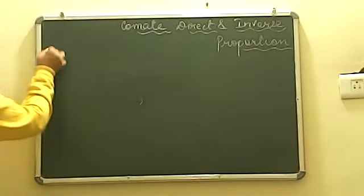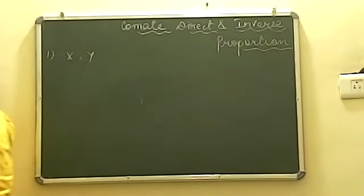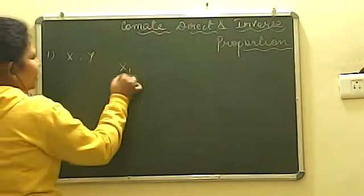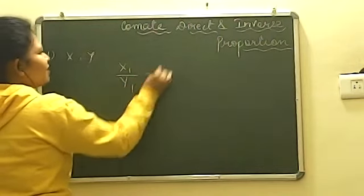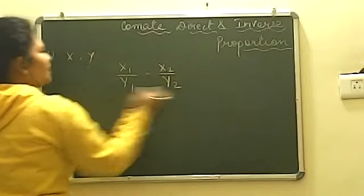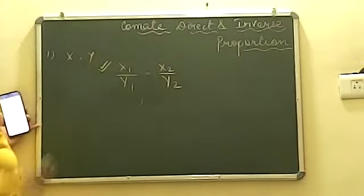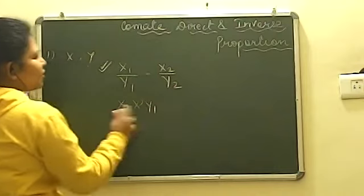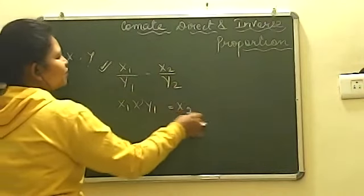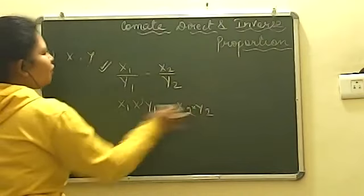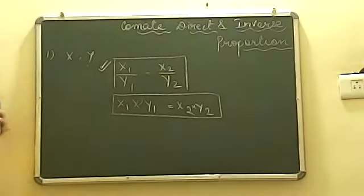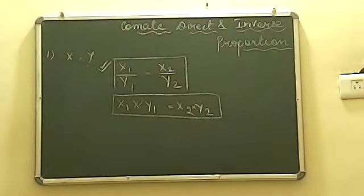First question of the MCQ part says that if x and y are two quantities and they vary inversely, which of the following is true? You must be remembering when we have direct variation we have the condition x1 upon y1 equals x2 upon y2. When we talk about inversely, the same condition goes in the form of multiplication: x1 into y1 equals x2 into y2. This is the condition for inverse. So for inversely, option number B will be the right answer.